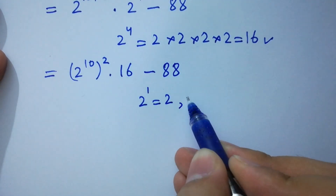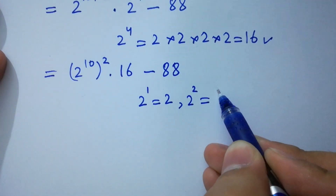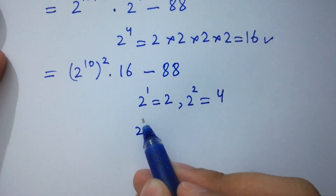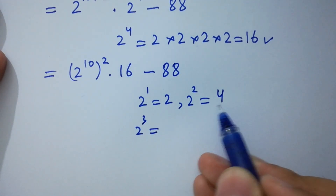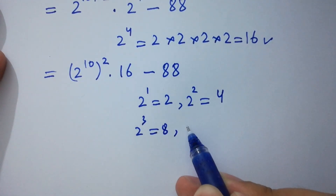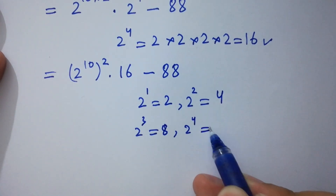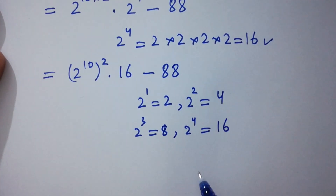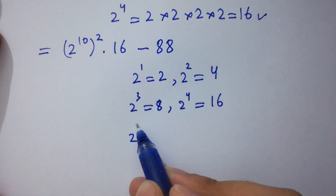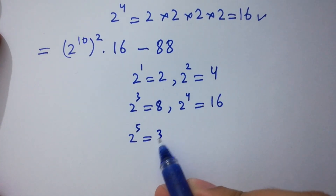Now let's compute powers of 2. 2 to the power 1 equals 2. 2 to the power 2 equals 4. 2 to the power 3 equals 8. 2 to the power 4 equals 16. 2 to the power 5 equals 32.